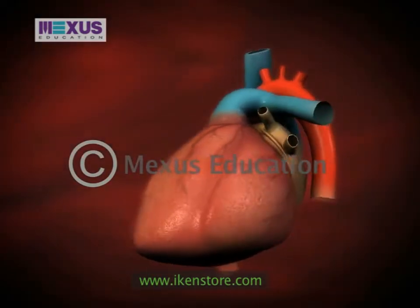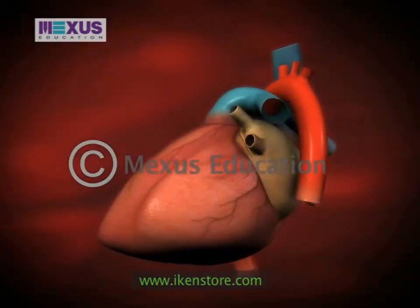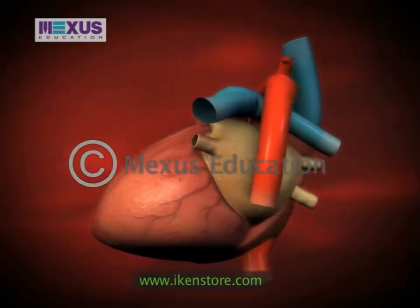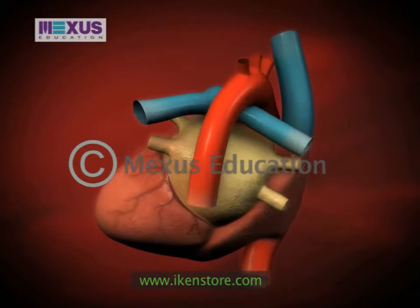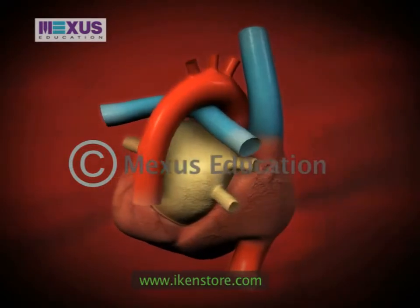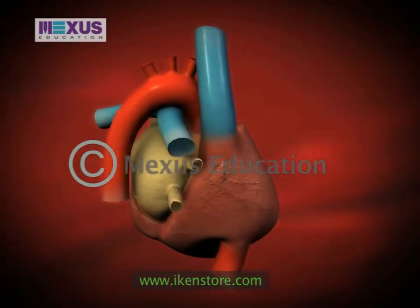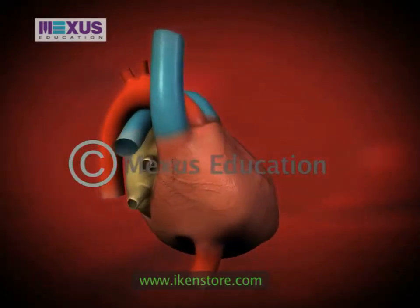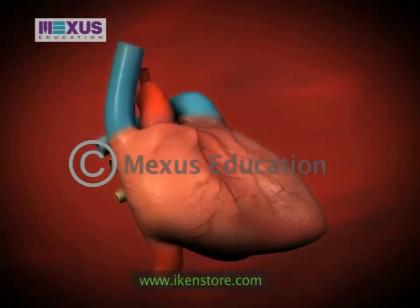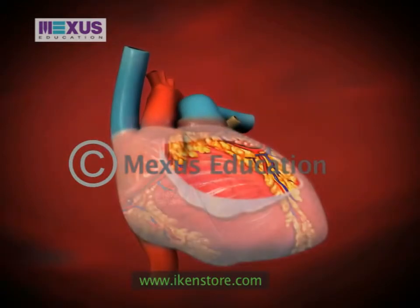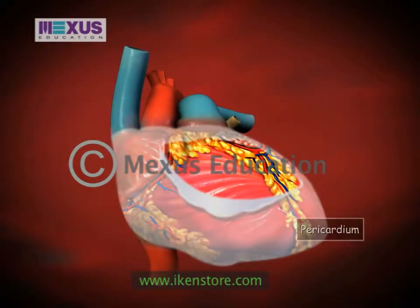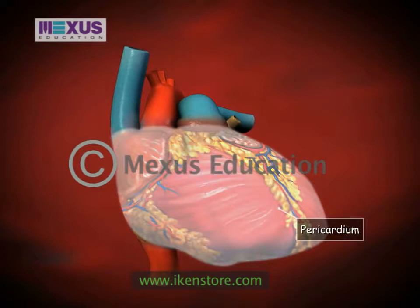The heart is a hollow muscular organ that is about the size of a fist. It is surrounded by a thin layer of tissue called the pericardium, or heart sack.